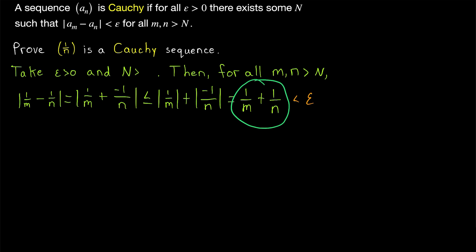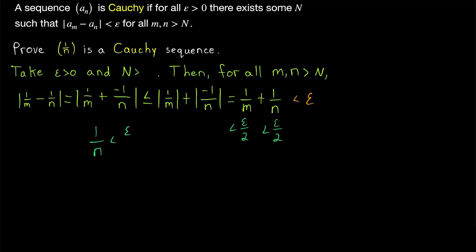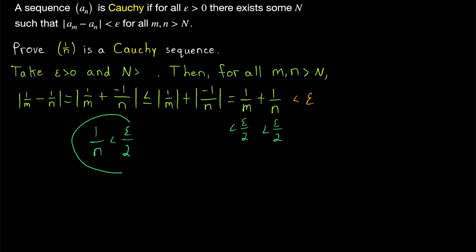How could we guarantee that 1 over m plus 1 over n is less than epsilon? We would just need 1 over m to be less than epsilon over 2 and 1 over n to be less than epsilon over 2. If those are both true, then we're done. Let's work with n: we want 1 over n to be less than epsilon over 2. Remember, m and n are arbitrary natural numbers greater than big N. We're trying to figure out how big big N needs to be for 1 over n to be less than epsilon over 2. Solving for n by inverting both sides of the inequality gives us n greater than 2 over epsilon. So if n is greater than 2 over epsilon, then 1 over n is less than epsilon over 2.